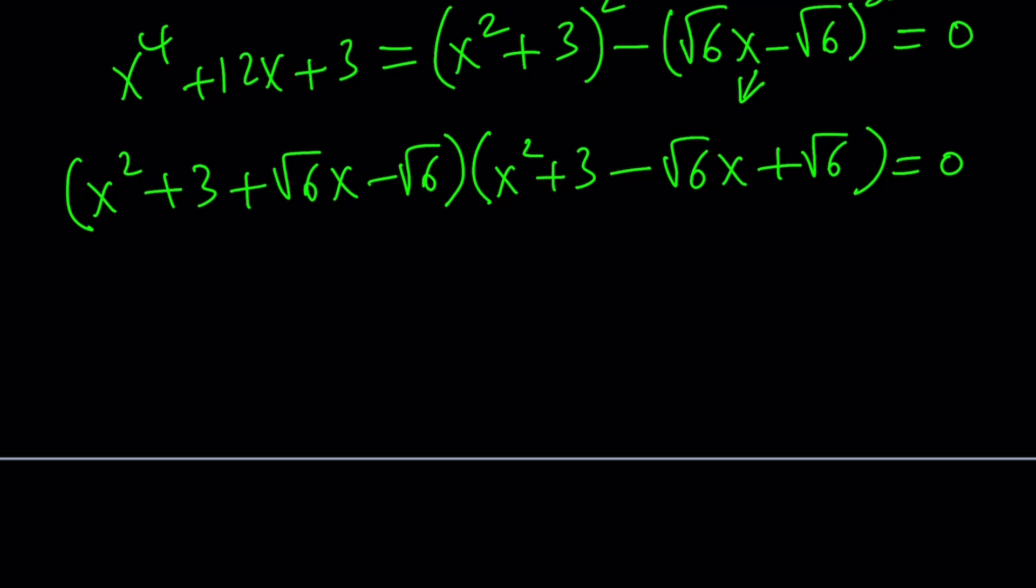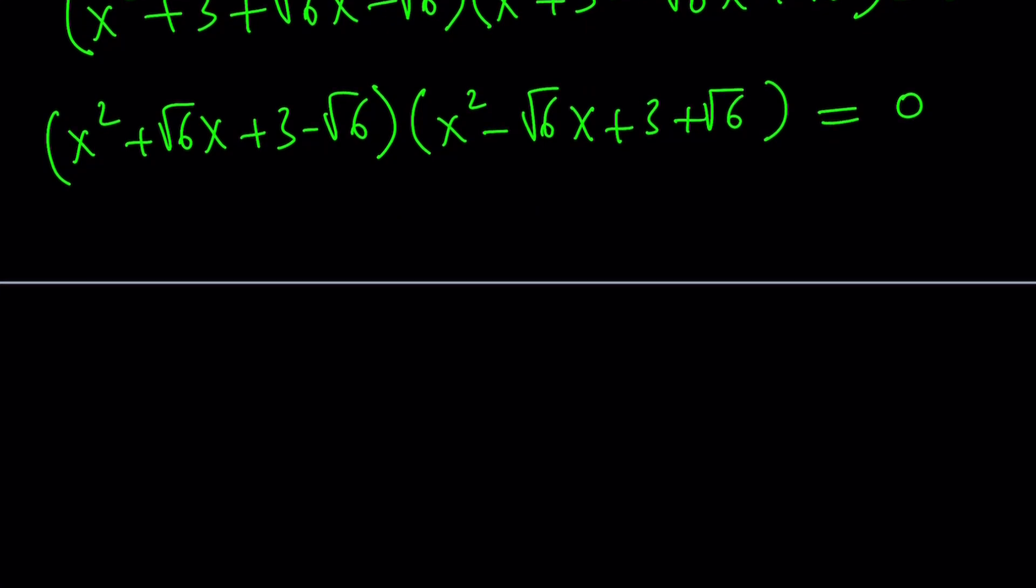Now what am I going to do with this? Solve each one using the quadratic formula. But let's go ahead and arrange this a little bit. x squared plus square root of 6x plus 3 minus square root of 6, and x squared minus square root of 6x plus 3 plus square root of 6 equals 0. A lot of radicals. But let's go ahead and solve each one.